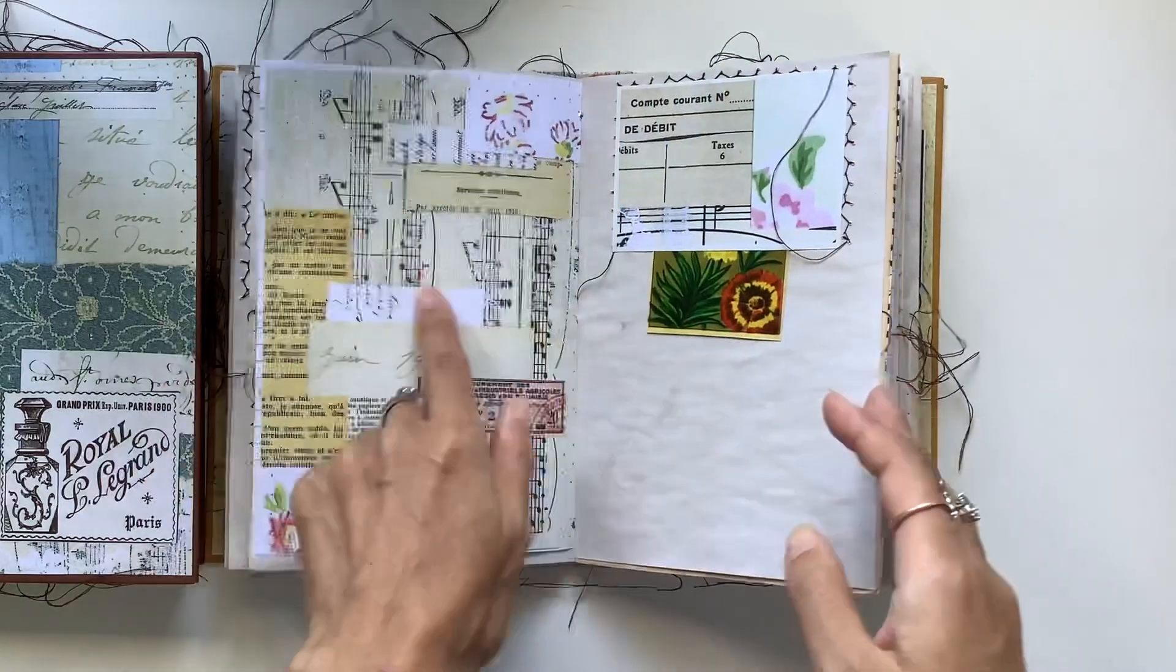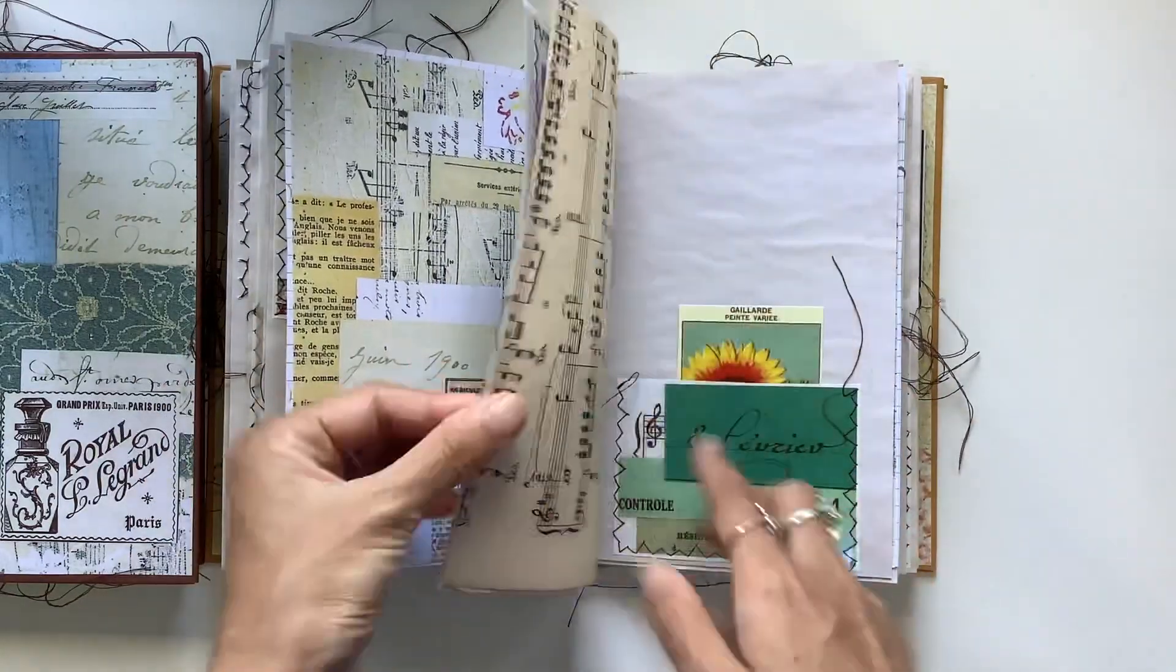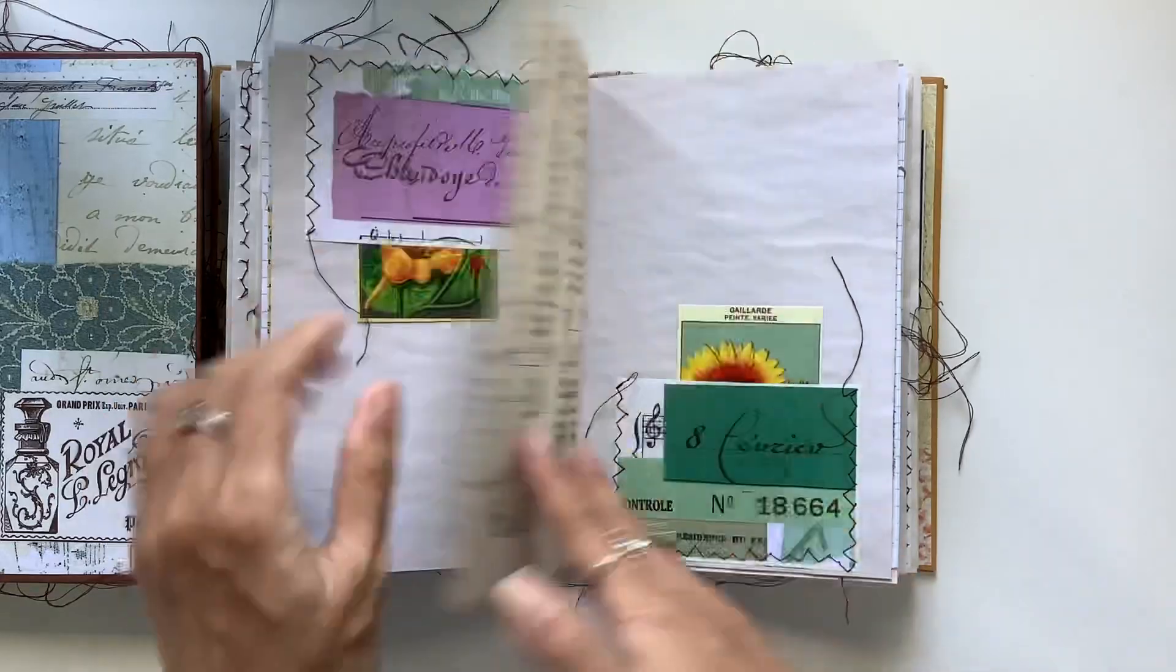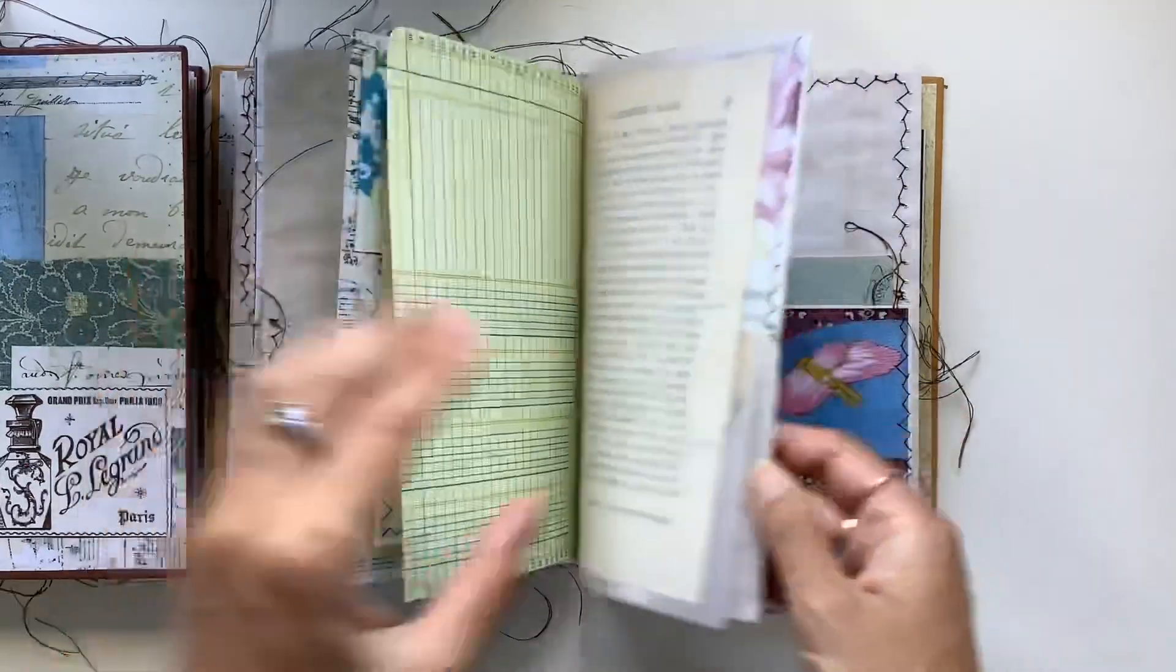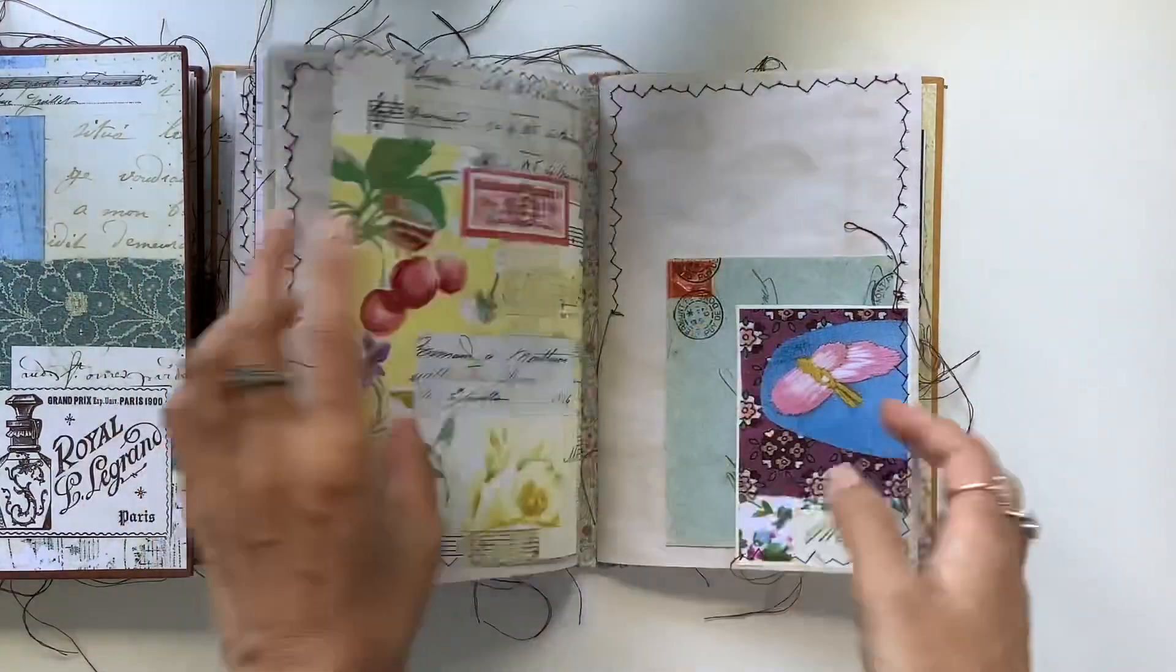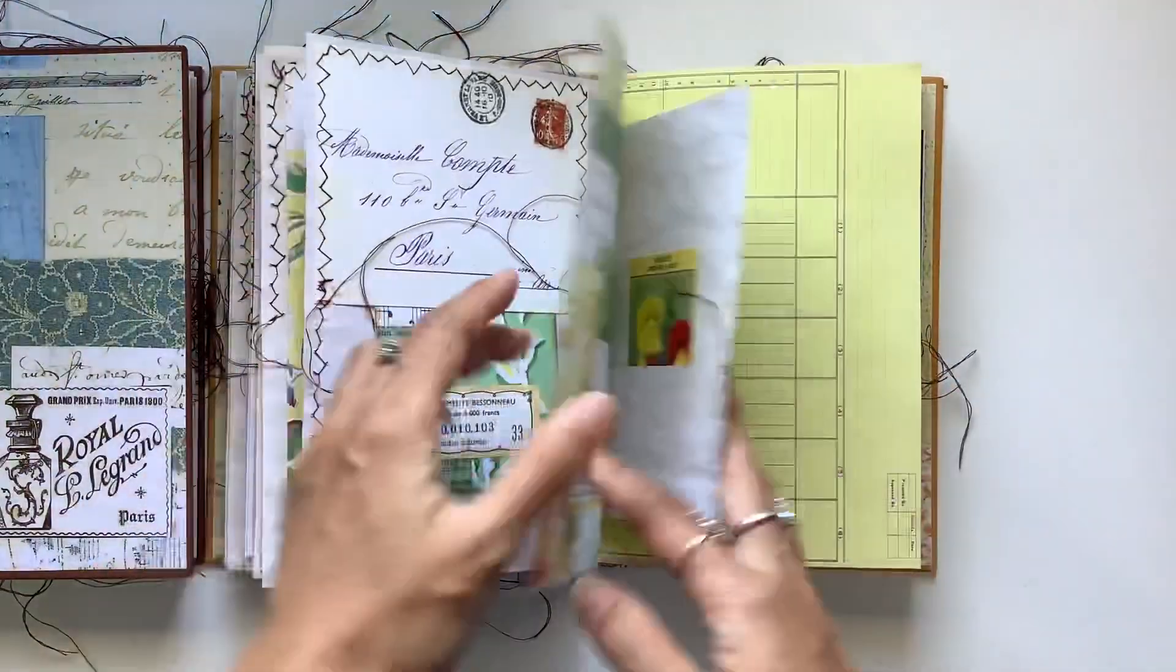And pretty much most of the pages and ephemera and pockets are available in my Etsy. We've got the collage packs, the seed packets, the envelopes. That's not an envelope. The envelopes, the ledger and the receipts. That's all there in case you would like to have a go at making your own one.